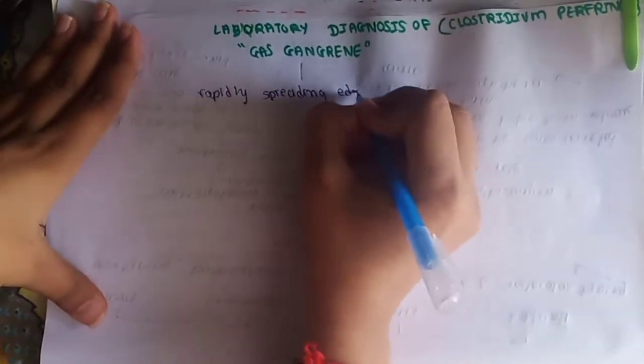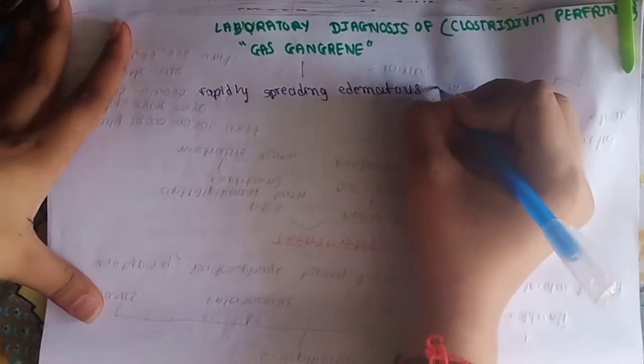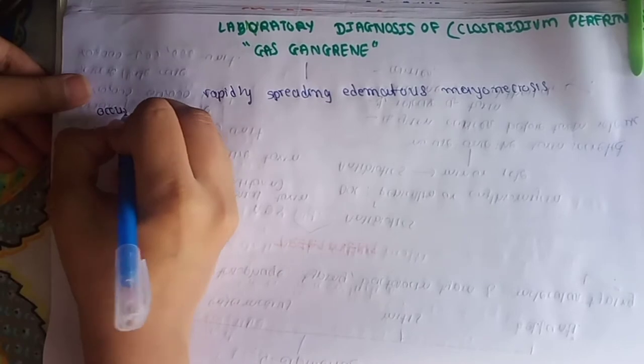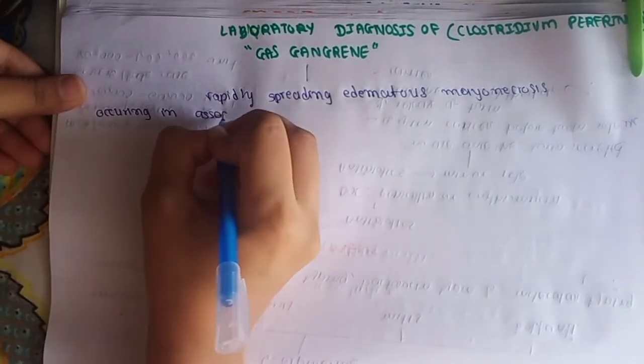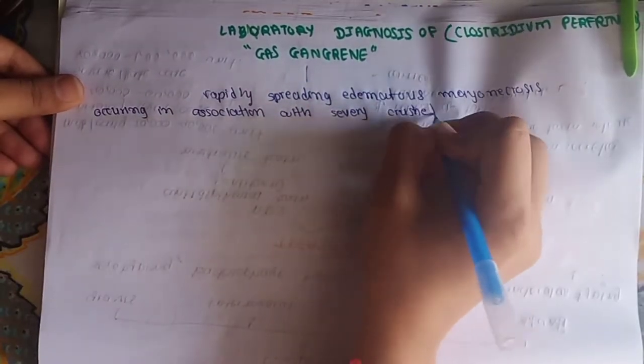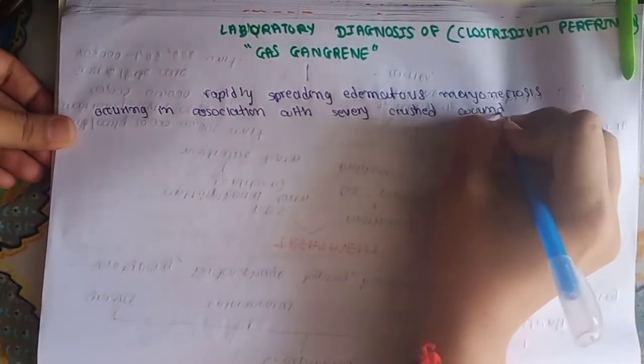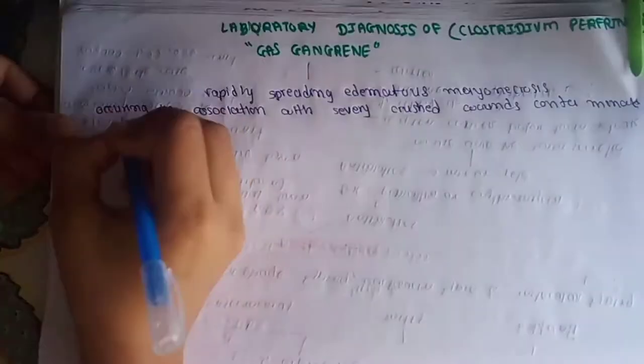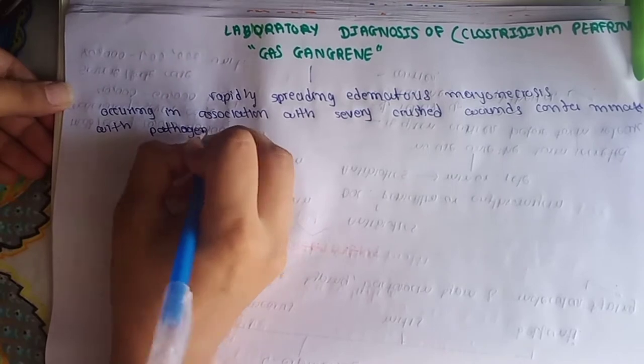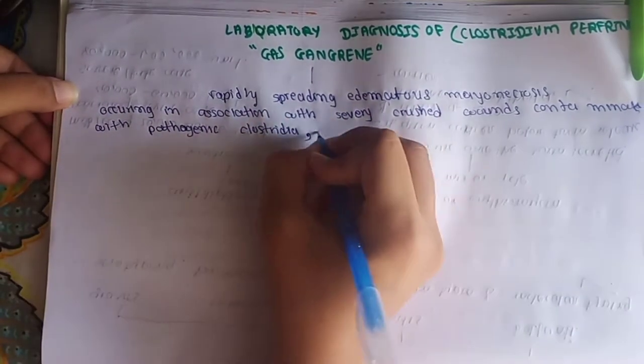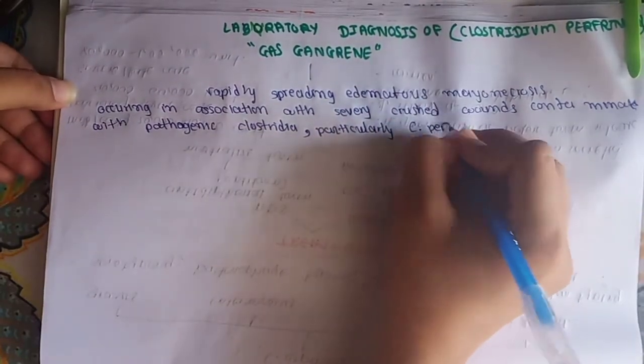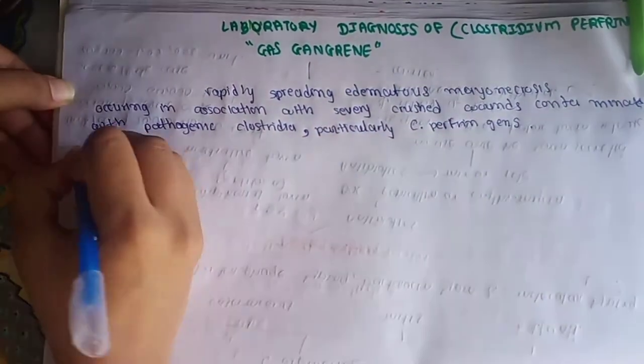Gas gangrene is rapidly spreading edematous myonecrosis. This means rapidly spreading muscle necrosis occurring in association with severely crushed wounds. The wounds are severely crushed so the blood supply and oxygen supply are inhibited, and this severely crushed wound and myonecrosis is contaminated with pathogenic clostridia, particularly Clostridium perfringens.